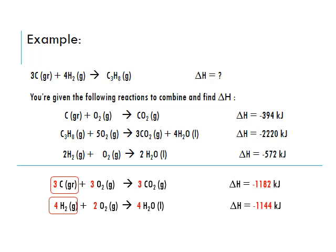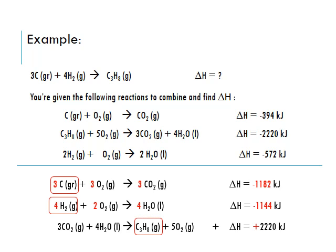The last chemical we need is C₃H₈, propane. We find it in the middle reaction, but it's on the left side as a reactant and we need it on the right side as a product. So we flip this reaction. The coefficient is already 1 on both sides, so that's consistent. After flipping, 3 carbon dioxide and 4 water molecules become the reactants, and propane plus 5 oxygen molecules become the products. Flipping the reaction changes the sign of delta H from negative to positive. We put a box around the C₃H₈.